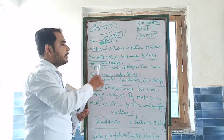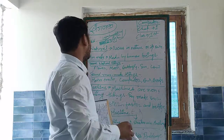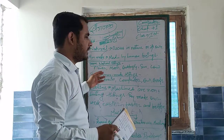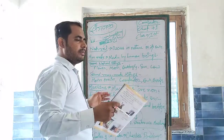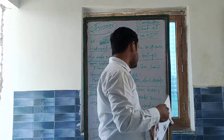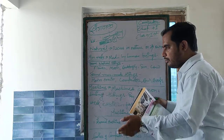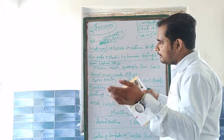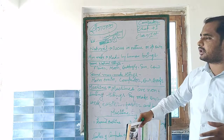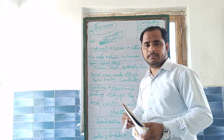So our chapter is done. We know natural things and manmade things. Natural things are found in nature and manmade things are made by humans. A machine is a manmade thing, and we need to learn more about machines and computers. Thank you.